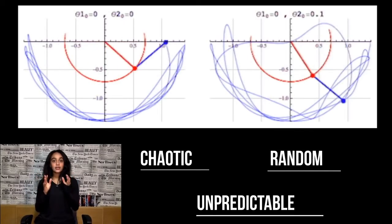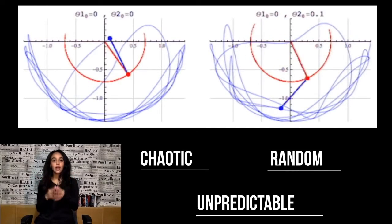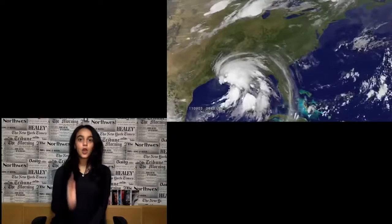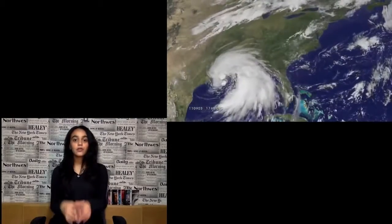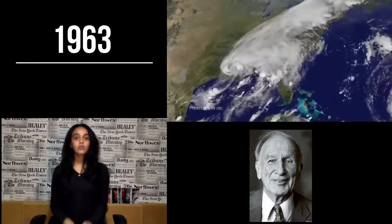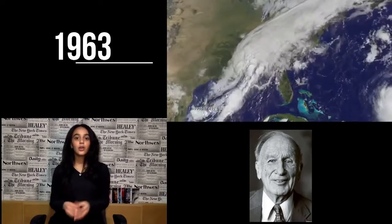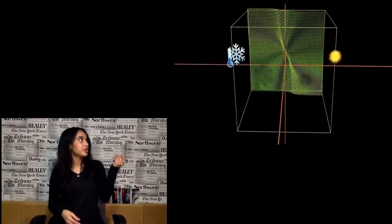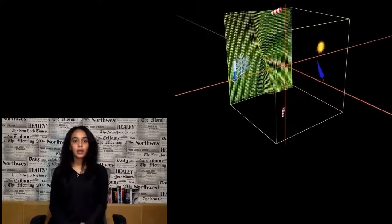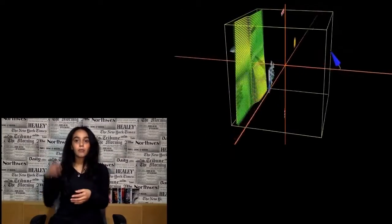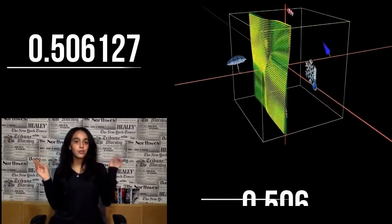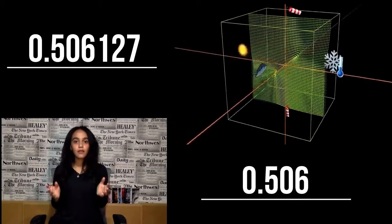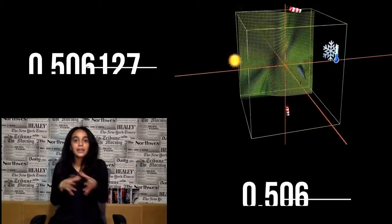All the events that seem to you unrelated have an underlying pattern. Weather, for example, is one of the most complex systems we know. Lorenz discovered chaos in weather in 1963 while he was trying to figure out weather as a function of parameters like temperature, pressure, etc. He rounded a number from a six-digit number to a three-digit one, and discovered that the results were completely different.